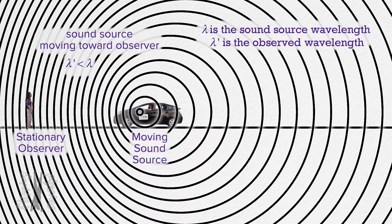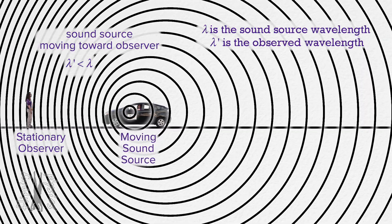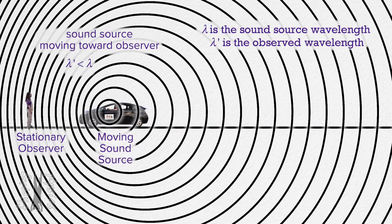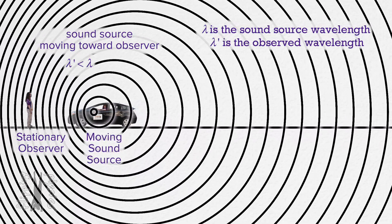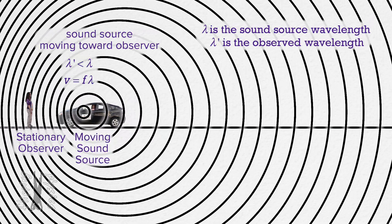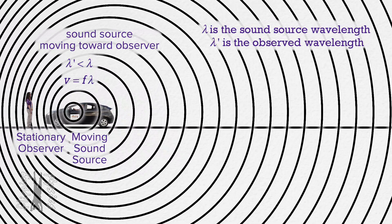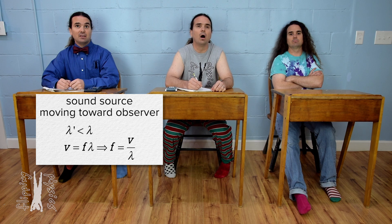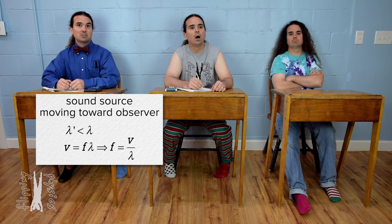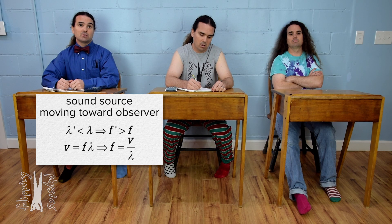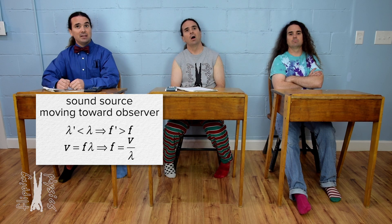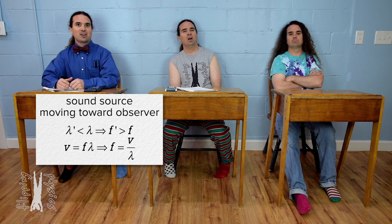The observed wavelength is decreased — how does that affect the observed frequency? We know the speed of a wave equals the frequency times its wavelength, meaning frequency and wavelength are inversely related. So if the observed wavelength is decreased, the observed frequency must be increased. In other words, when a sound source is moving towards an observer, the sound heard has a smaller wavelength and larger frequency. A larger frequency sounds like a higher pitch, so the sound we hear when the car is coming towards us has a higher pitch.